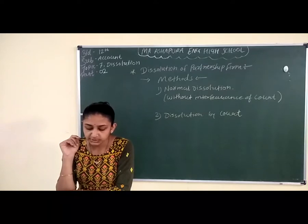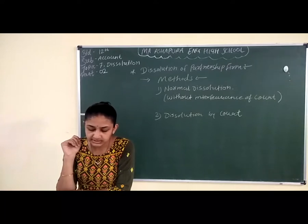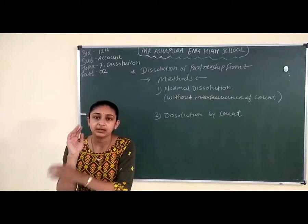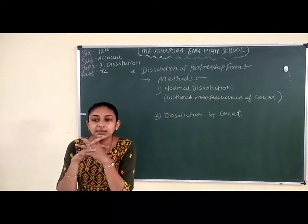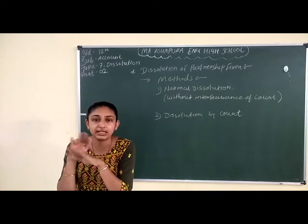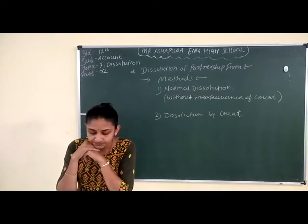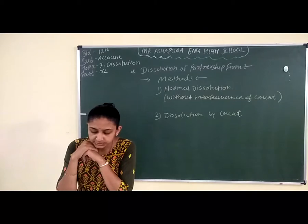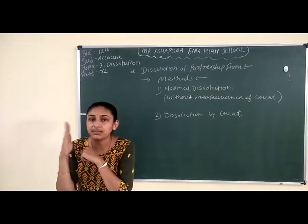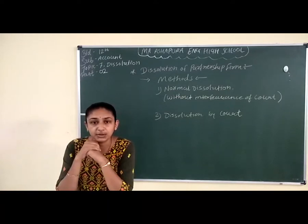Fourth is dissolution on happening of certain contingencies. First is if constituted for a fixed term — by the expiring of that term. अगर कोई भी purpose पूरा करने के लिए partners साथ मिलकर कोई business चला रहे हैं, अगर वो purpose complete हो चुका है तो फिर वो firm को close कर देंगे। And another is if constituted to carry out a specific end — by the completion of that end. अगर उसका कोई particular end है, वो end complete होने के बाद वो firm को dissolve कर देंगे।